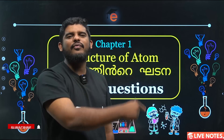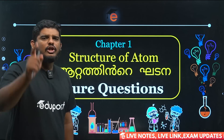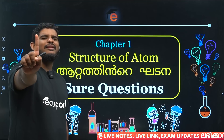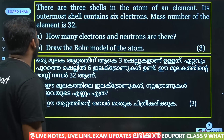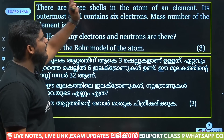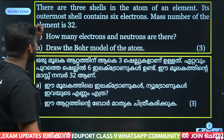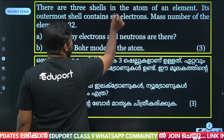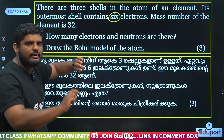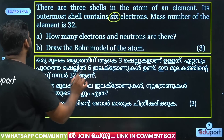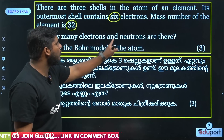We will answer them in the next chapter. There are three shells in the atom of an element. Its outermost shell contains six electrons. The mass number of the element is 32. How many electrons and neutrons are there?